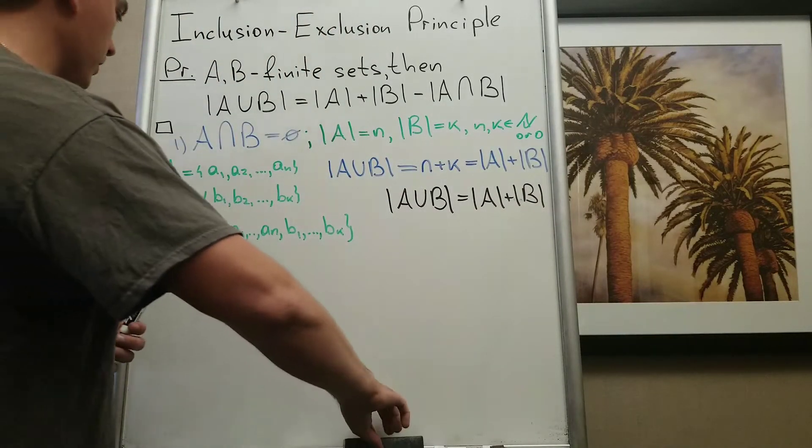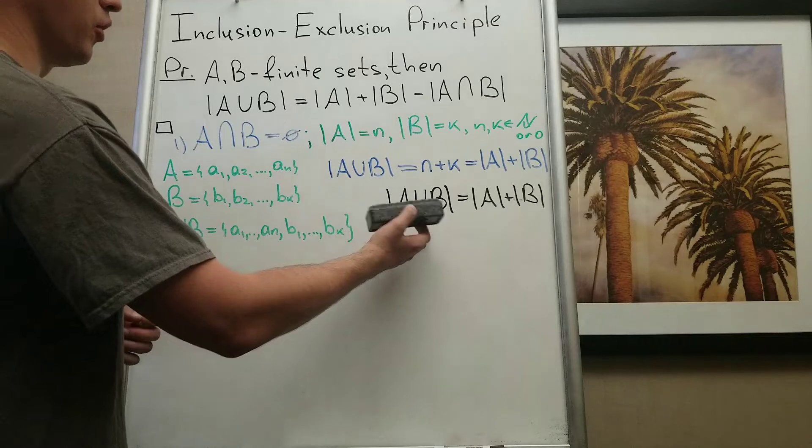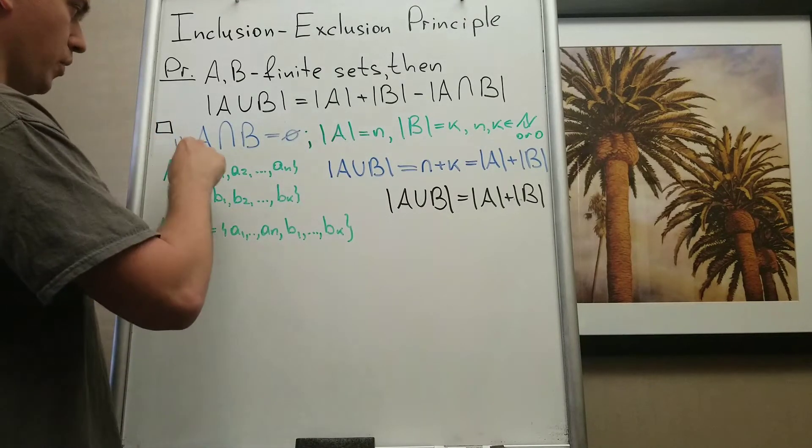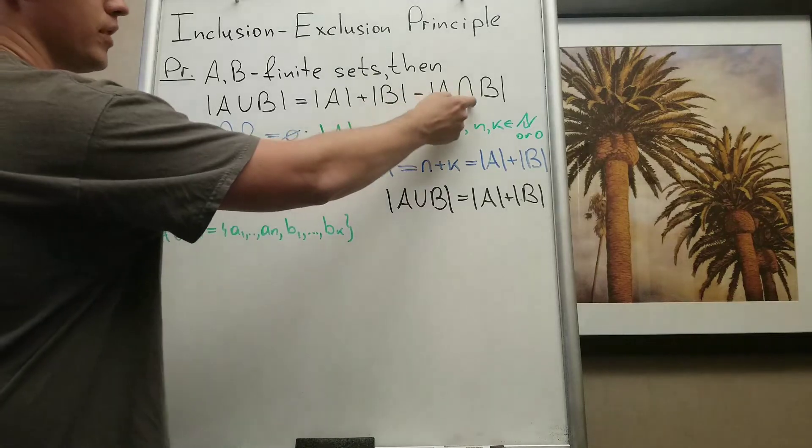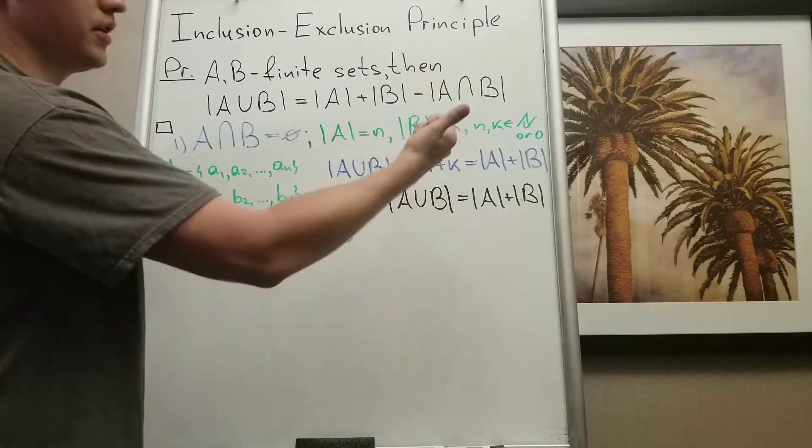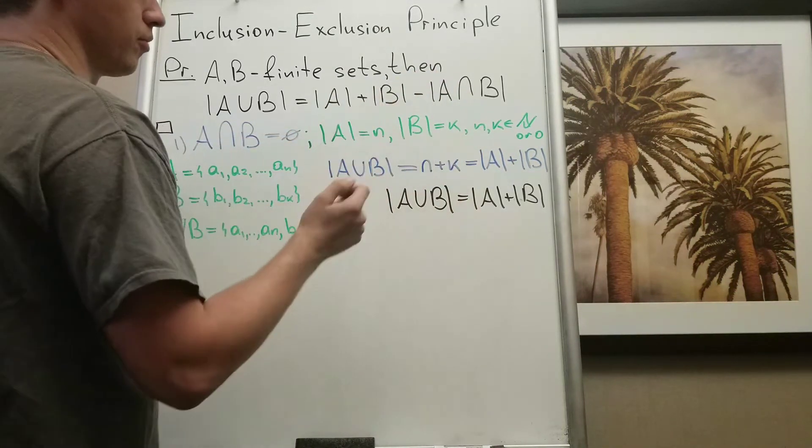So step one, we proved this formula. Why? Because when A intersection B is empty set, we know the cardinality of empty set is zero. So we got exactly this formula.